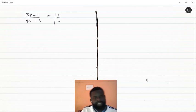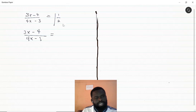With this problem, we have a mixed fraction that we need to convert first. Converting the mixed fraction, we have 3x minus 4 over 4x minus 3 equals, when we convert one and a half, 3 over 2.